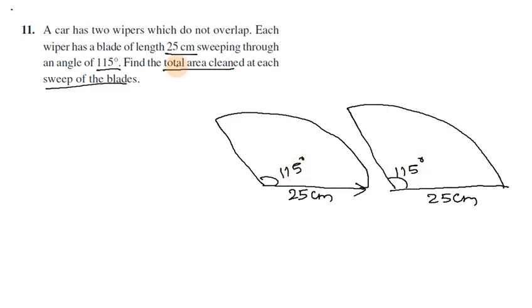Find the total area cleaned each sweep of the blades. Since they don't overlap, we calculate the total area for both wipers. Theta is 115 degrees. The wiper length is the radius, so radius is 25 cm.